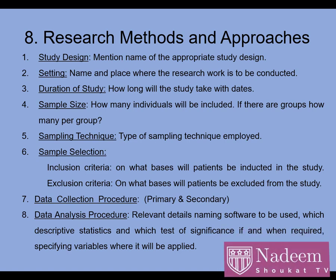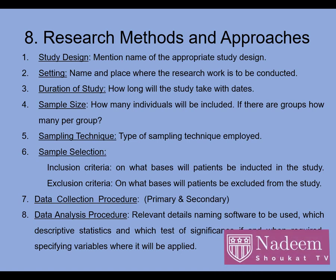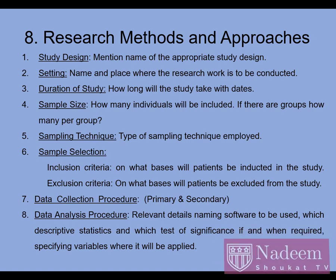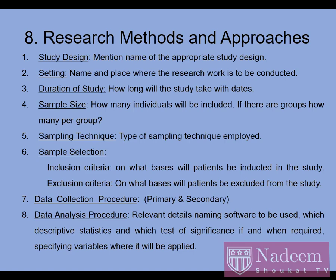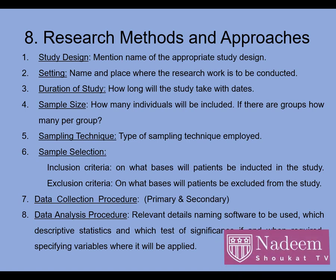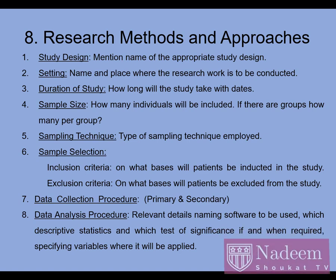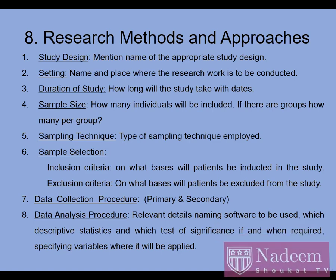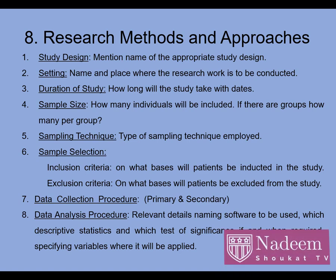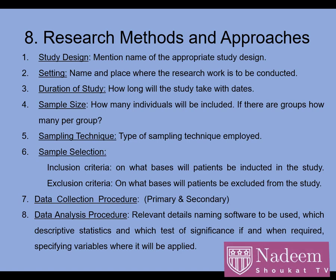Primary data is collected through direct observation, questionnaires, or natural observation. Secondary data is data that has already undergone statistical treatment — taken from publications, journals, or books. After data collection, data analysis is mentioned: you specify which tool or software you are using for analysis, such as SPSS or other software, to analyze the research.